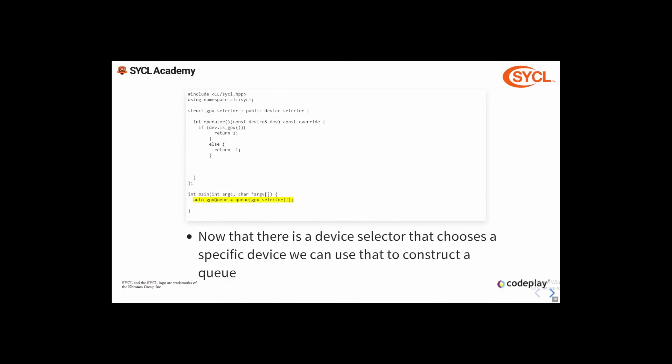Now that we have our device selector, to use it we can simply pass it to the constructor of the queue, and this will create a queue which targets the resulting device. There are a number of other ways to configure a queue and we'll touch on some of these later in this lecture, but this is the most common approach.